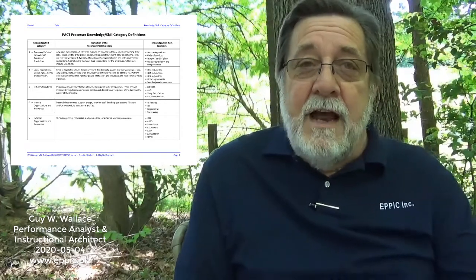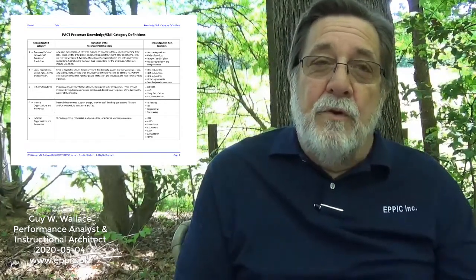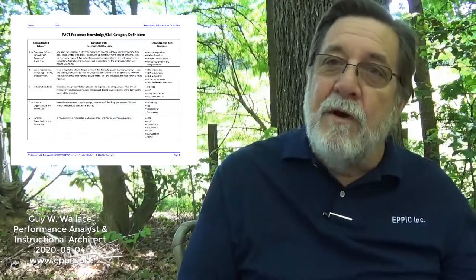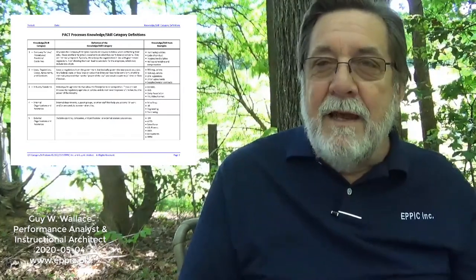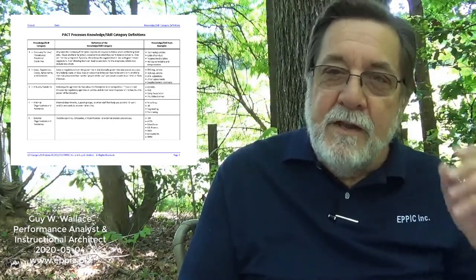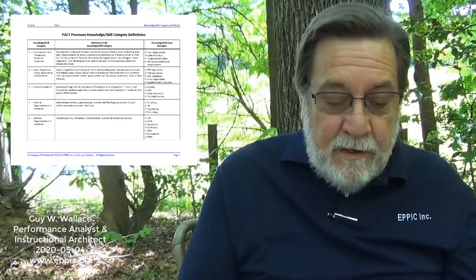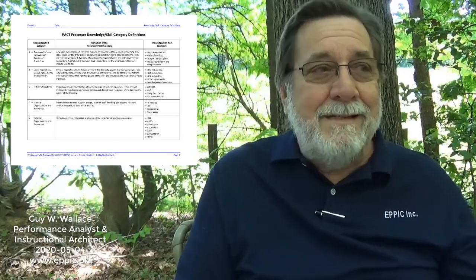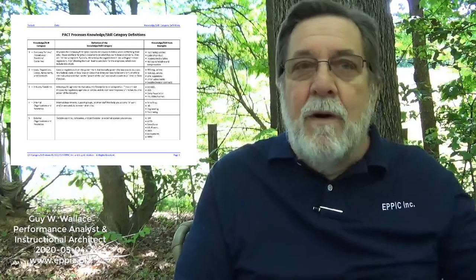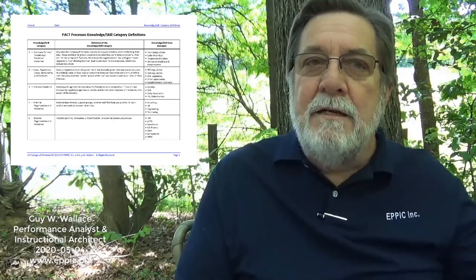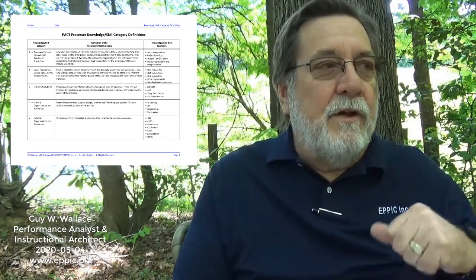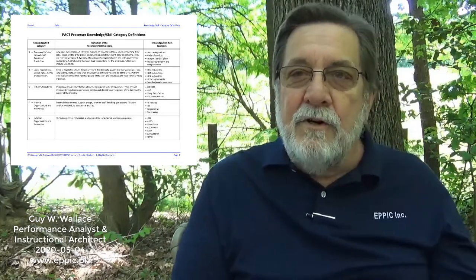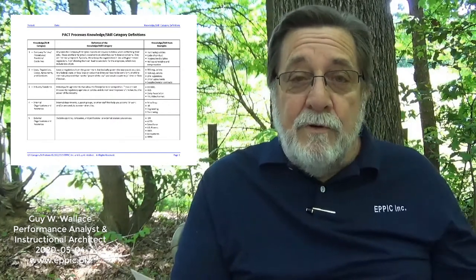The third category is industry standards. Sometimes it's important for people doing the performance to adhere to industry standards, and sometimes they want to break free of the standards and do something new — or there may not be any industry standards at all. So that's a category you may or may not use. The next one, category four, is internal organizations and resources, and the fifth category is external organizations and resources — what are the various organizational entities inside and outside the company that you might need to call upon to get your work done? That includes other organizations, corporate libraries, books, websites, and all the resources internally and externally available to help people do their jobs.